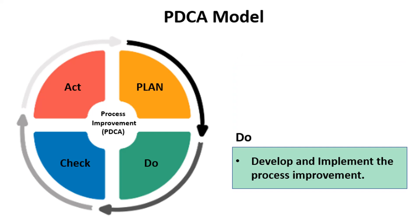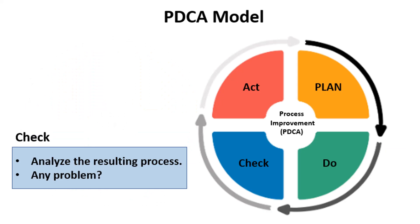The problem solution or process improvement is developed and implemented during the Do step. The team also decides on how to verify the effectiveness of the improved process.